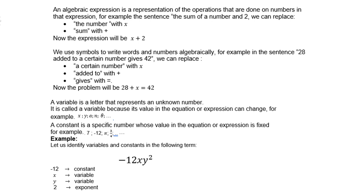A constant is a specific number whose value in the equation or expression is fixed. For example, 7, negative 12, pi, three-quarter, etc.